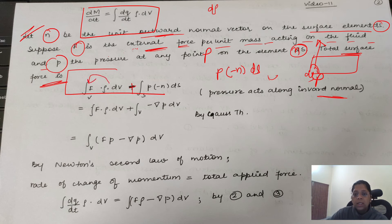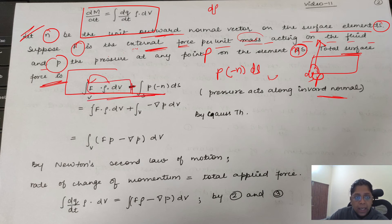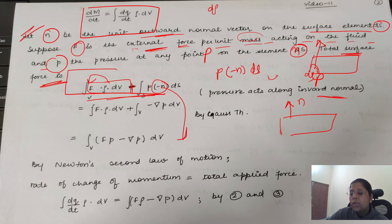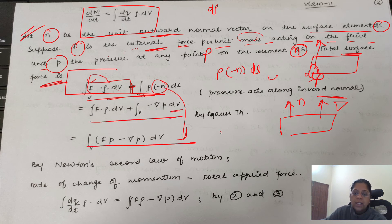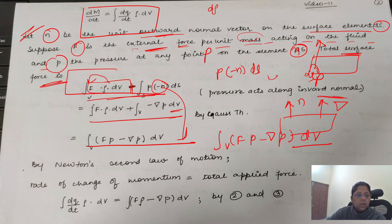External force per unit mass F applied: mass into F gives ρ·dV·F. Using the boundary surface theorem, −n on the surface converts to −∇p over the volume. So adding both contributions, the total force becomes: ∫_V (Fρ − ∇p) dV. By Newton's second law of motion, total applied force equals the rate of change of momentum.